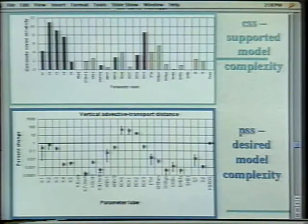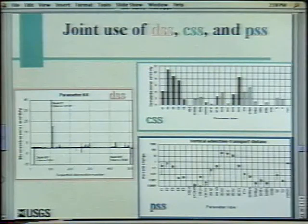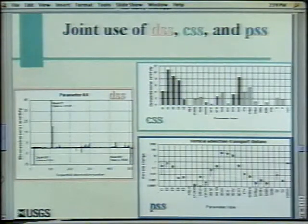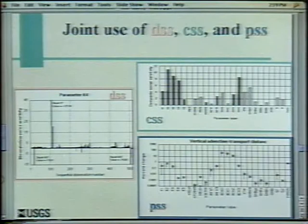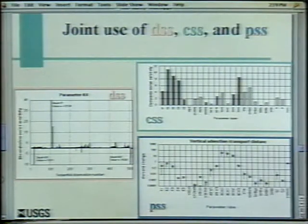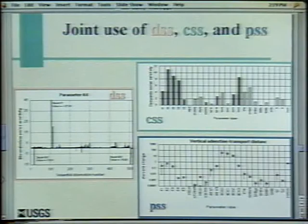We can take it one step further. If K4 were important — which it isn't — we could go to the composite-scaled sensitivity and see we have a fair amount of information on that. But going further back to the dimensionless-scaled sensitivity, we'd see that four specific wells are really important. Maybe I'd better check those, because now I know they're important to our predictions. So you can take the analysis all the way back to individual observations.